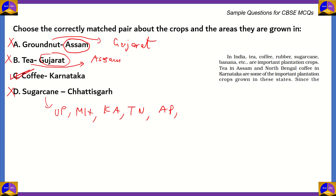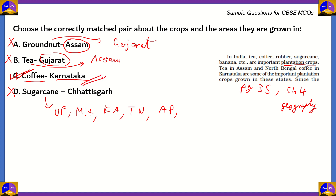The correct option here is option C, coffee in Karnataka. In India, tea, coffee, rubber, sugarcane, banana, etc. are important plantation crops. Tea in Assam and North Bengal, and coffee in Karnataka are some of the important plantation crops. This is from page 35 from Chapter 4, which is Agriculture in Geography. From that extract, it's clear that option C is the correct option.